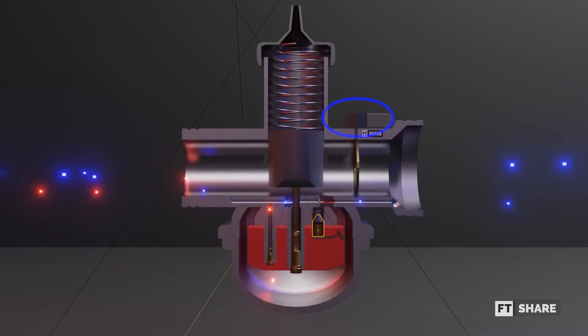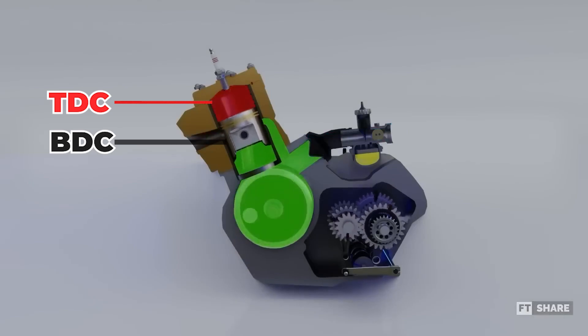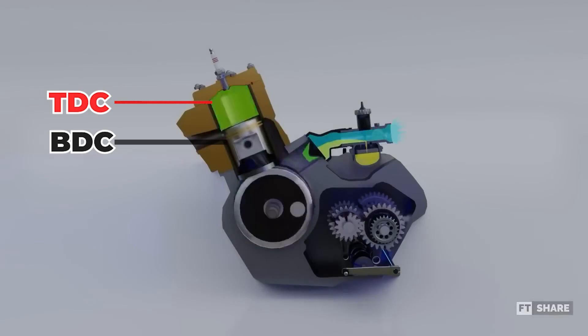As the name implies, this choke reduces the supply of air entering through the air intake and increases the air entering through the idle pipe. This creates greater turbulence in the floating chamber, resulting in a higher ratio of incoming liquid-fuel mixture to compensate for the reduced air intake. The purpose of this process is to enhance the combustion intensity in the engine, thereby accelerating the increase in engine temperature to reach the ideal level.